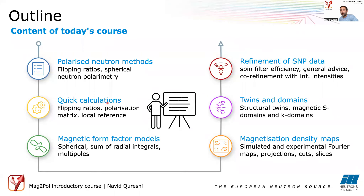I'll show you how to do quick calculations of flipping ratios and polarization matrices, and we'll talk about the local reference frame. Then I'll show how to introduce different magnetic form factor models — spherical, sum of radial integrals, or multipoles — and how to calculate magnetization density maps with projections, cuts, and slices. We'll also cover twins and domains, then work with real spherical neutron polarimetry data, correct it for spin filter efficiency, and do co-refinement with integrated intensities.